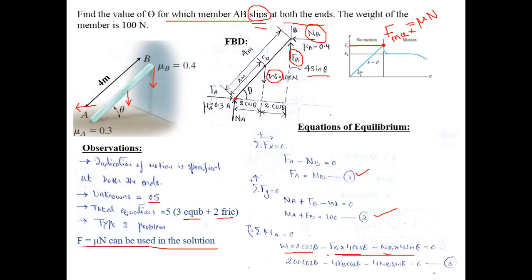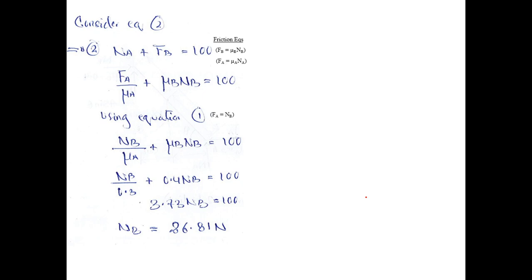Our end goal is to calculate θ, but equation three cannot be solved further yet. Substituting W = 100 Newtons: 200 cos θ − 4 Fb cos θ − 4 Nb sin θ = 0. This is equation three, where Fb and Nb are still unknown. We also recall equation two: Na + Fb = 100.